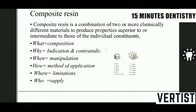Composite resin is another material which is most commonly used in the world because of the few drawbacks of silver amalgam which were existing till now. That is why it has evolved into too many types and too many forms so that we can use it to the best of its ability. Composite resin is a combination of two or more chemically different materials to produce properties superior to or intermediate of those of the individual constituents.